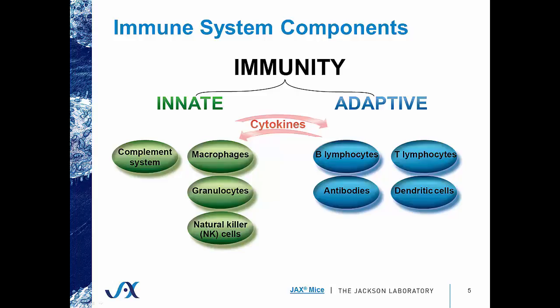The immune system can be broken up into two different components: innate immunity as well as adaptive immunity. Innate immunity is the first line of defense against pathogens and foreign invaders, and it contains various components that are hardwired to recognize and respond to diverse pathogens. Innate immunity includes the complement system, which is involved in lysing pathogenic bacteria and cells bound by antibodies, macrophages which engulf dead and dying cells, granulocytes that participate in allergic and inflammatory responses, and natural killer cells, which have the direct ability to kill infected or cancer cells.